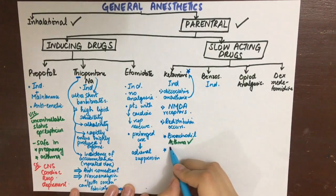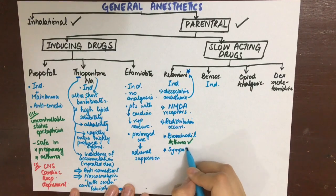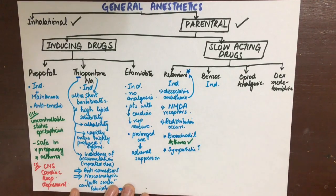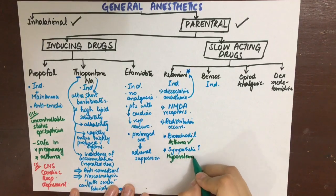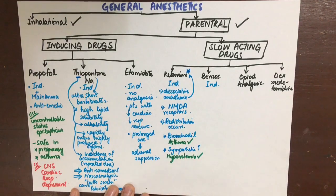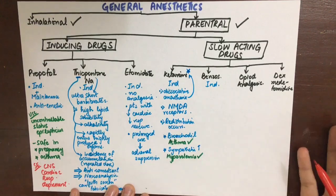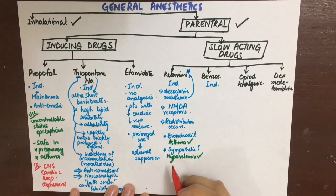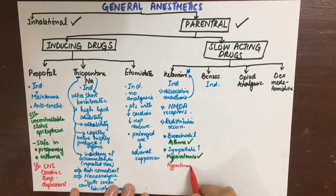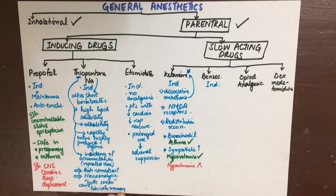Redistribution can occur with ketamine. It causes bronchodilation, making it better for asthmatics, and it increases sympathetic stimulation. So in cases of shock — such as hemorrhage or accident — ketamine is the drug of choice, although it is contraindicated in hypertensives due to increased sympathetic stimulation.